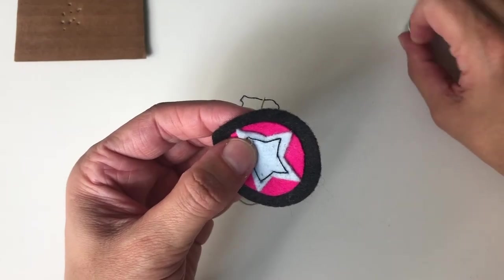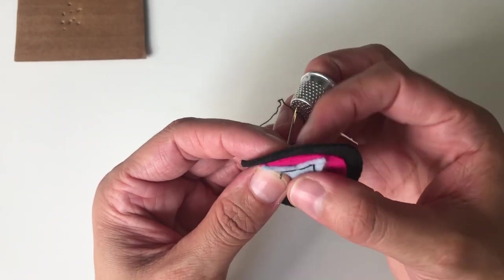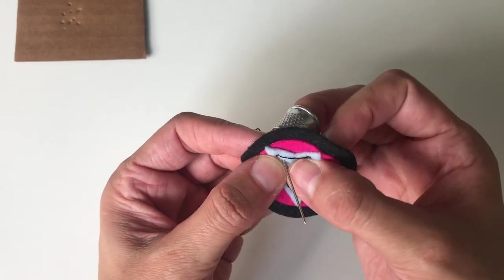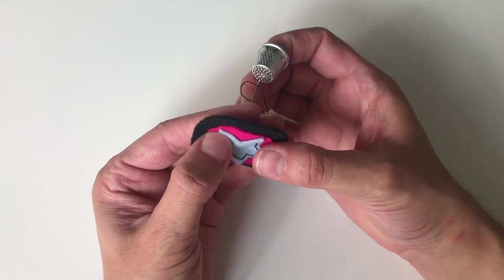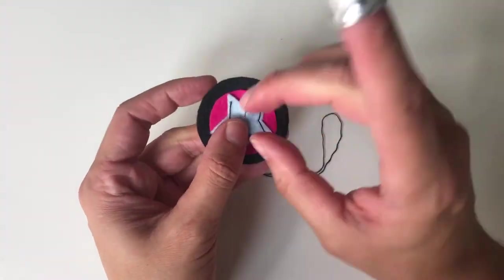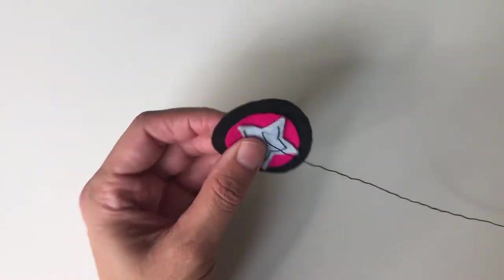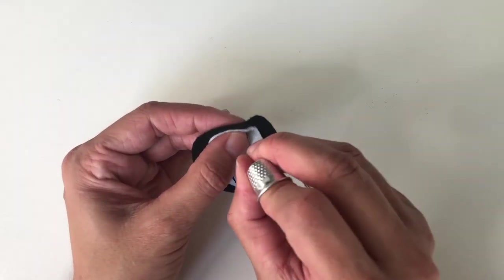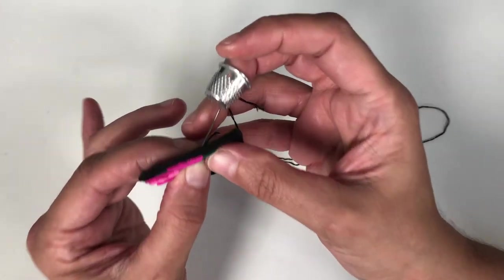A thimble is a pushing tool that can be used depending on the number of layers you're wanting to sew through. To use the thimble, place the eye end of the needle into one of the dimples on the thimble and then push the needle through. A thimble should stay comfortably on your index, middle finger, or thumb. It's important to work in whatever manner that is most comfortable for you.